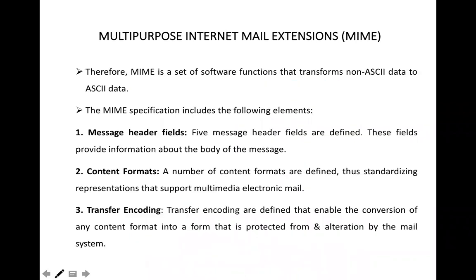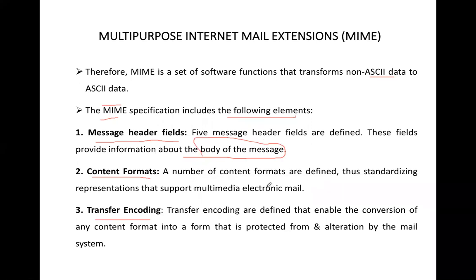MIME is a set of software functions that transform non-ASCII data to ASCII data. MIME specifications include three main elements: message header fields, content formats, and transfer encoding. The five message header fields provide information about the body of the message — whether it contains text, image, audio, or video. Content formats define standardized representations to support multimedia electronic mail. Transfer encoding enables conversion of any data format into a form that is protected from alteration by the mail system.